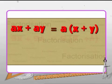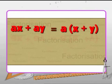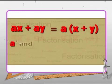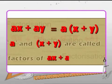In the algebraic expression ax + ay, 'a' is common to both the terms ax and ay. So we take out 'a' from both terms to obtain: ax + ay = a × (x + y). Here, 'a' and '(x + y)' are called the factors of the algebraic expression ax + ay.